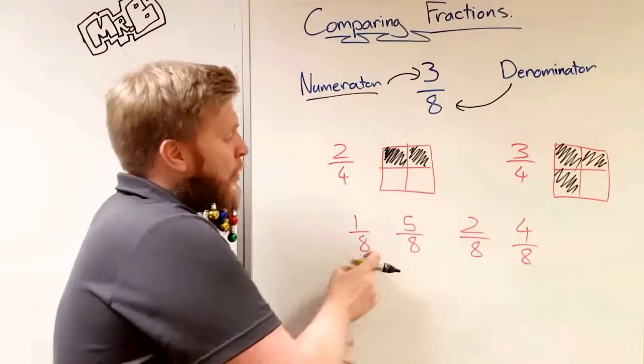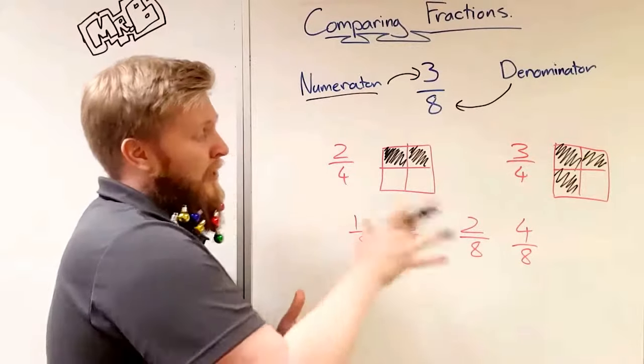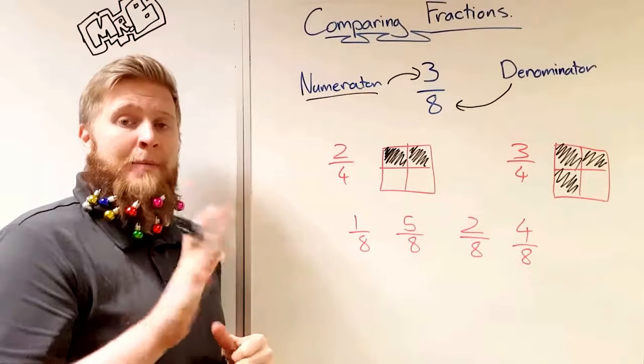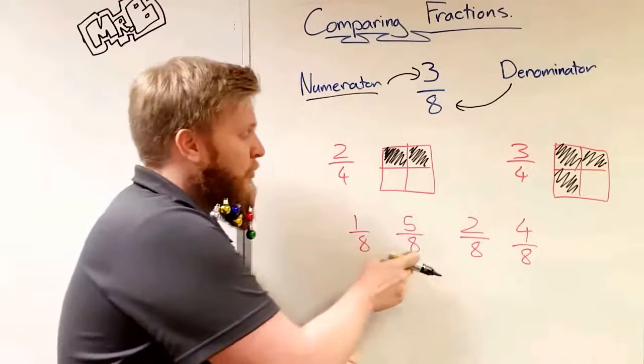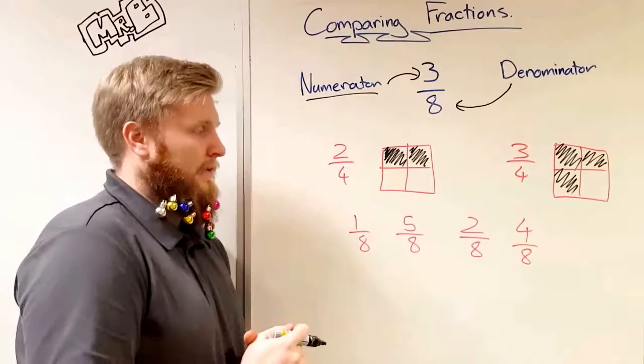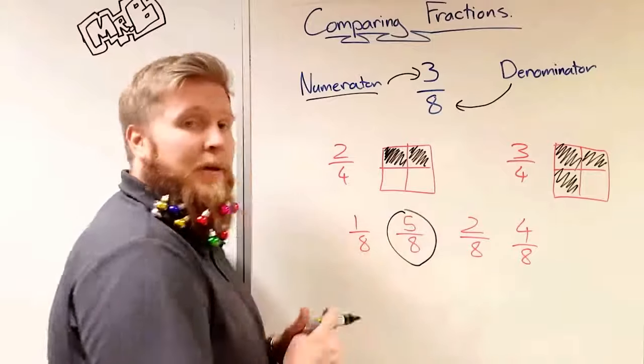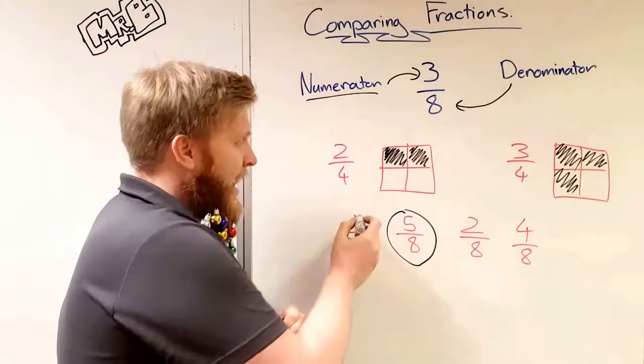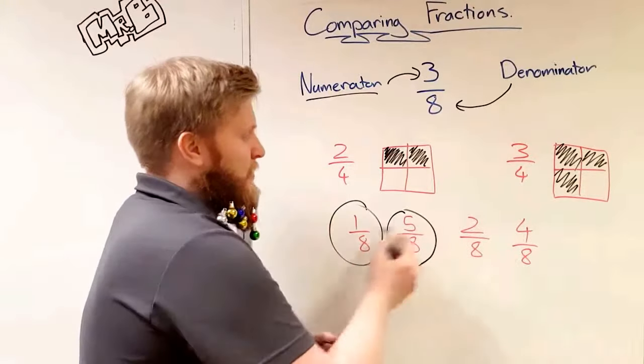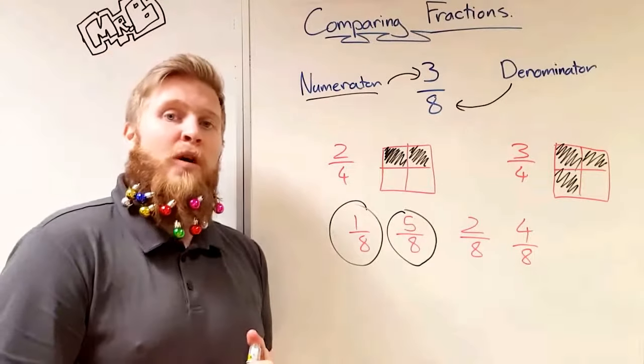All the denominators are the same, eight, so we can just have a look at the top line. So have a quick couple of seconds now, which do you think is the biggest and which do you think is the smallest? Now remember, you can only do this if all the denominators, the numbers on the bottom, are the same. Otherwise we'll have to do something else which we're going to look at.